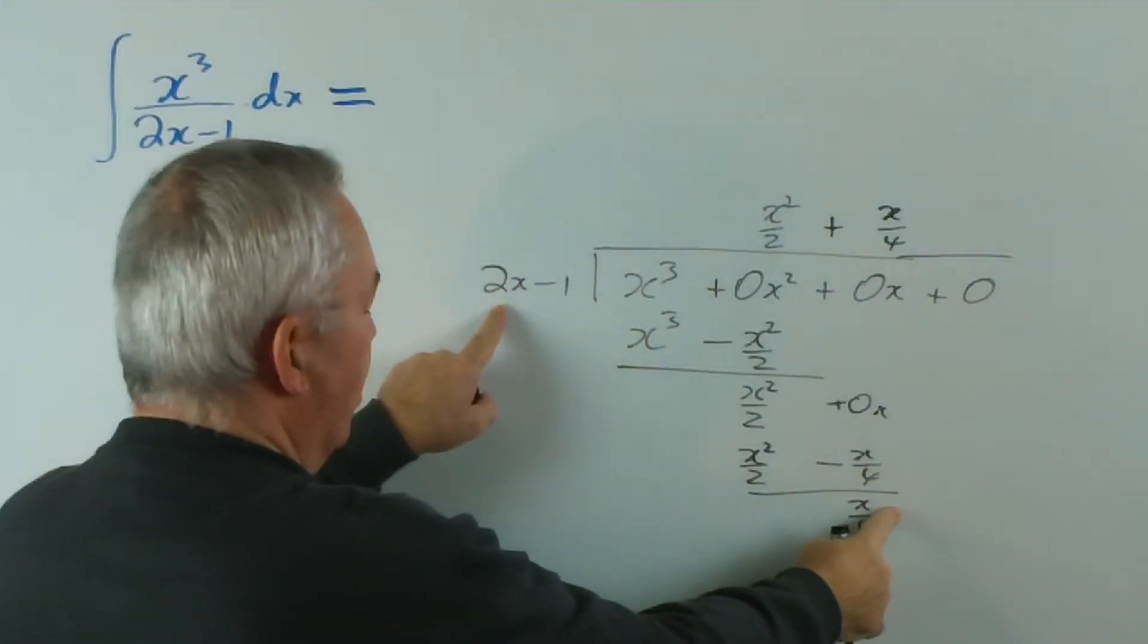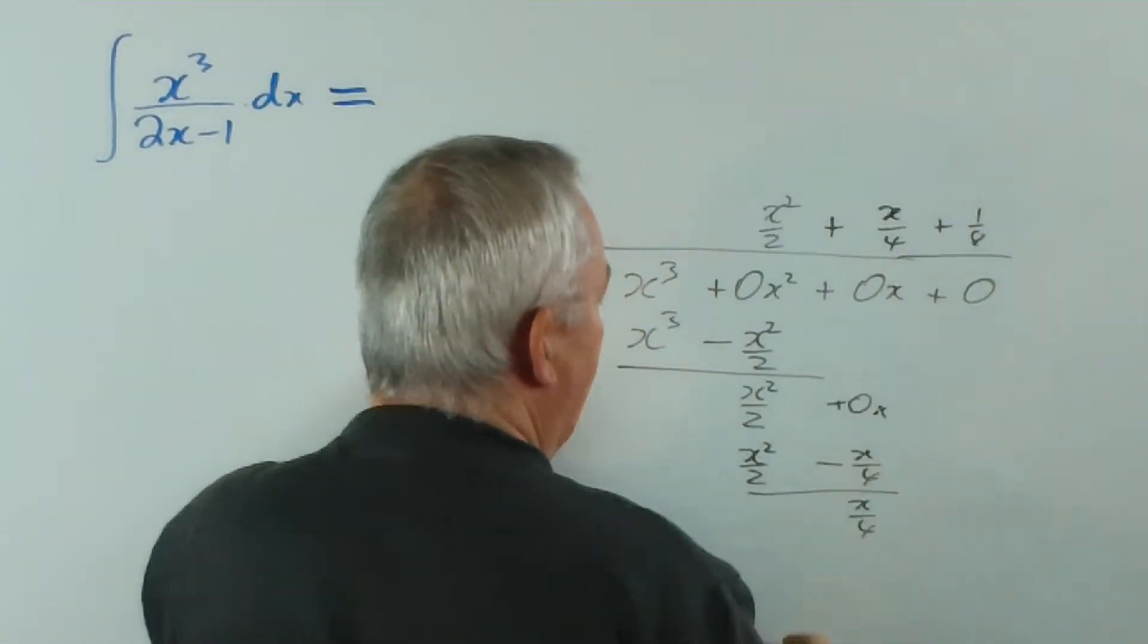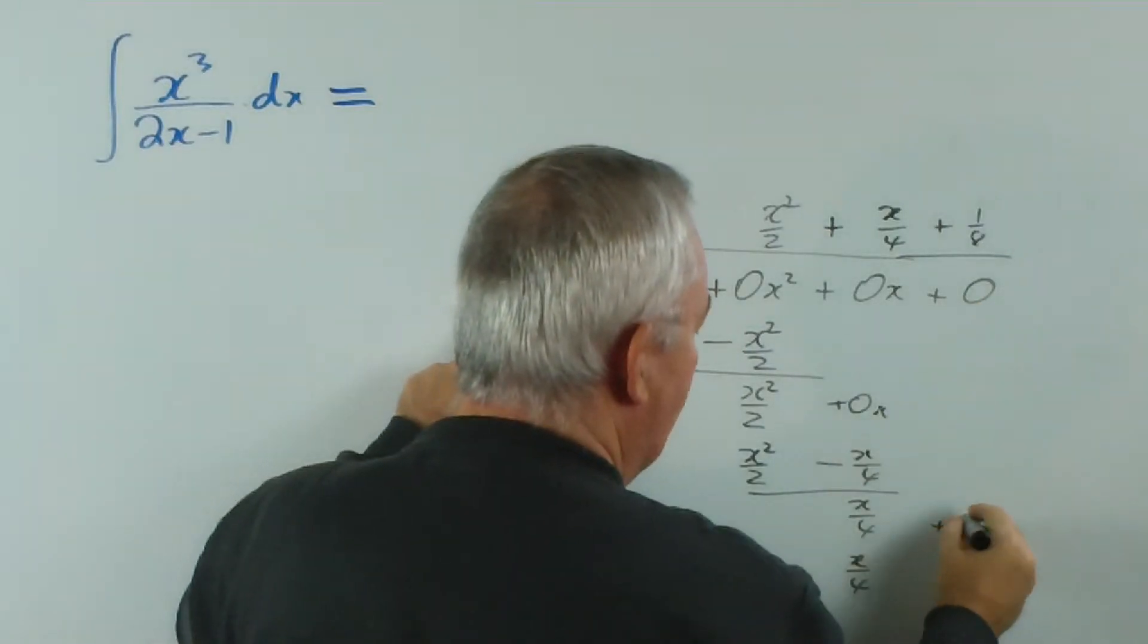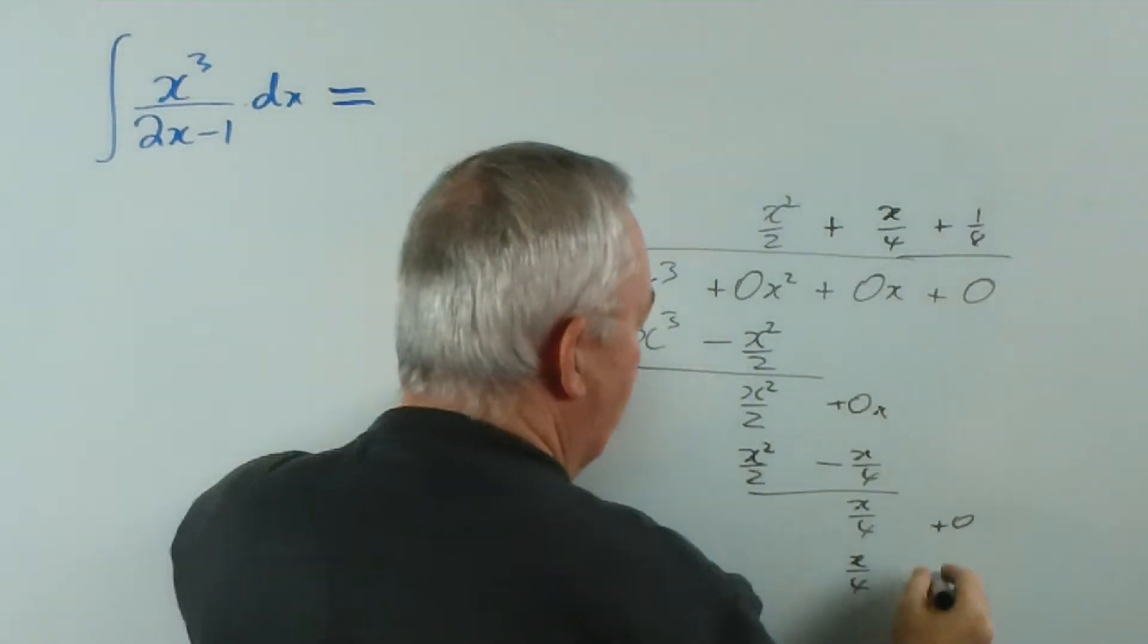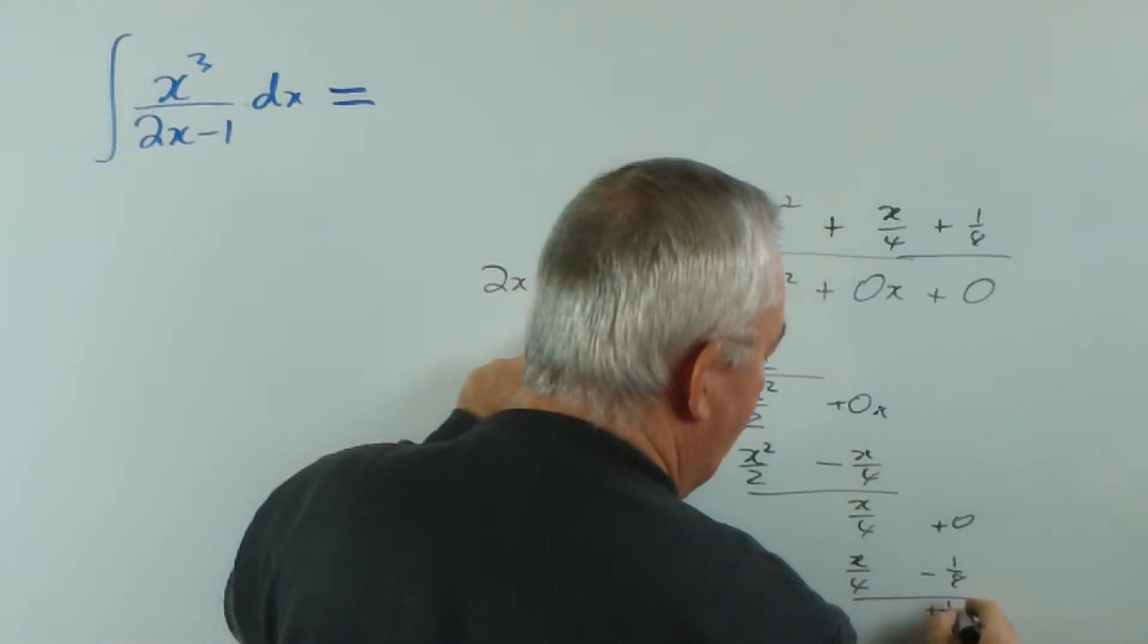x on 4 divided by 2x. The x's divide out, we get 1 eighth. And 1 eighth times that will be x on 4. This has come down as plus zero. And negative 1 times that is negative 1 eighth. And we subtract and get plus 1 eighth.